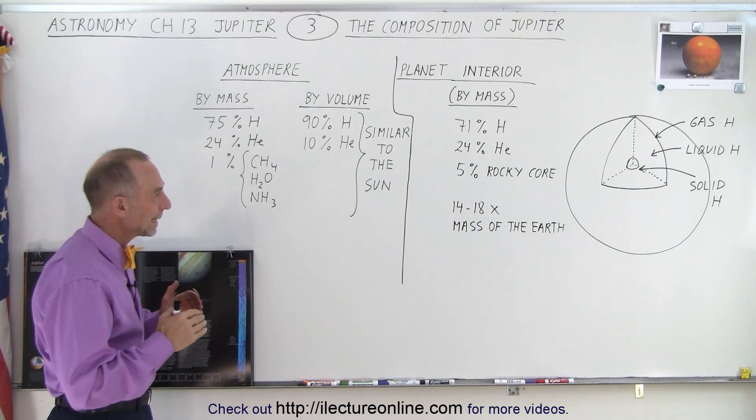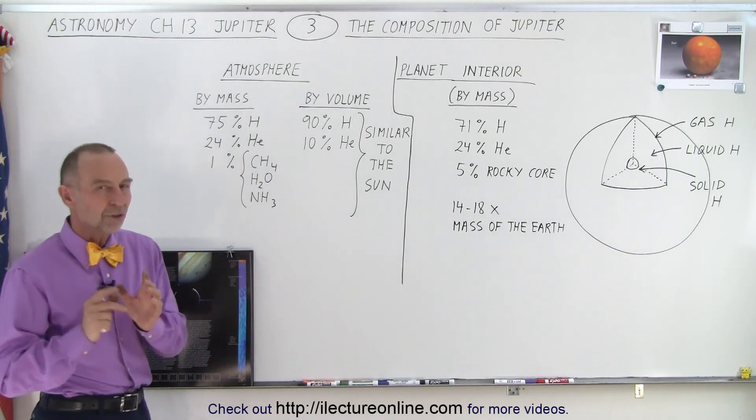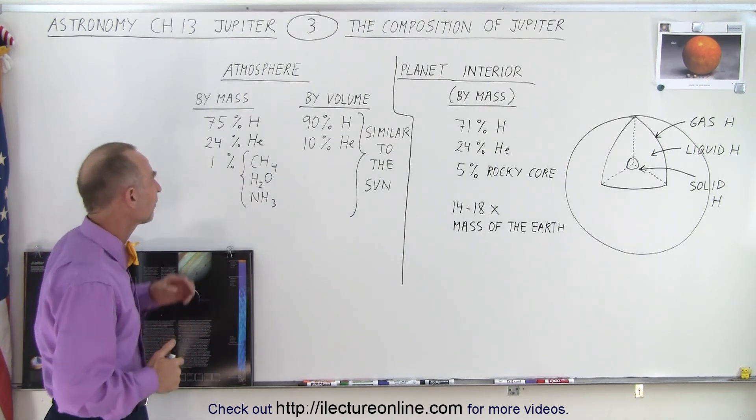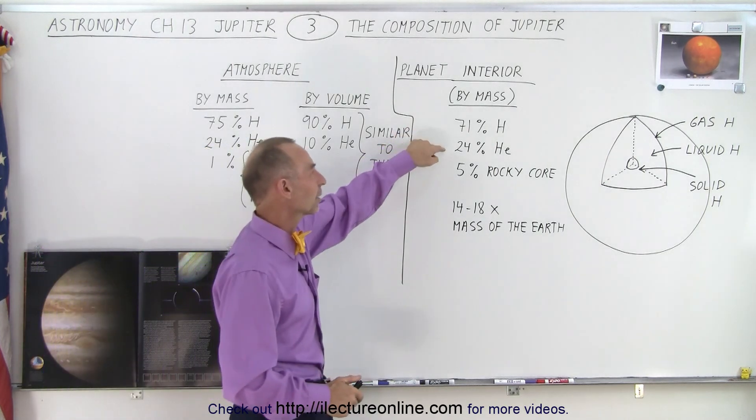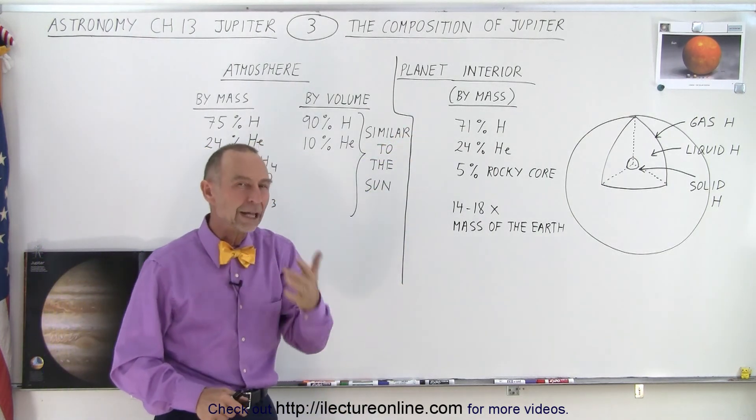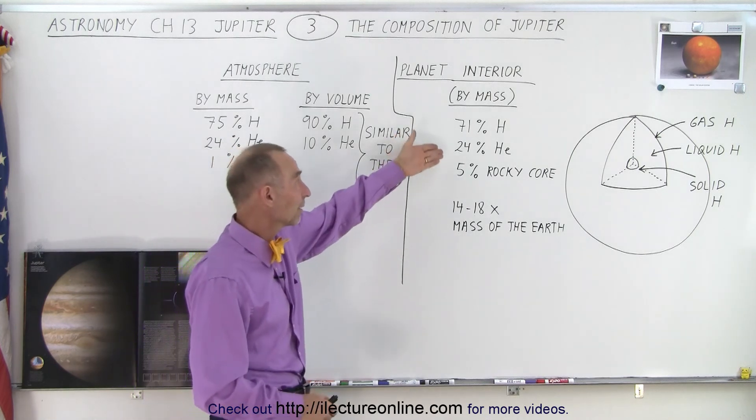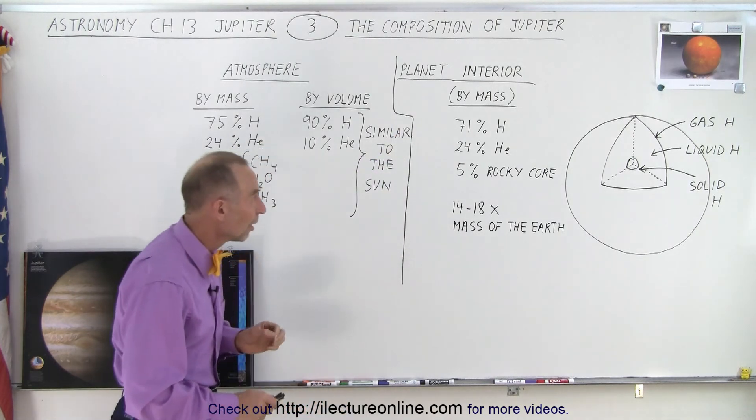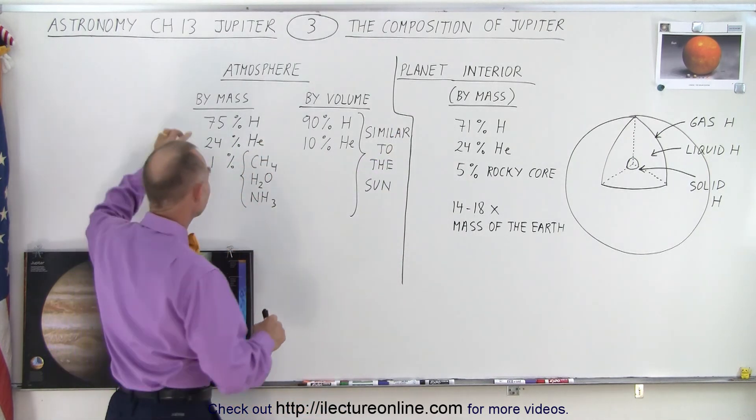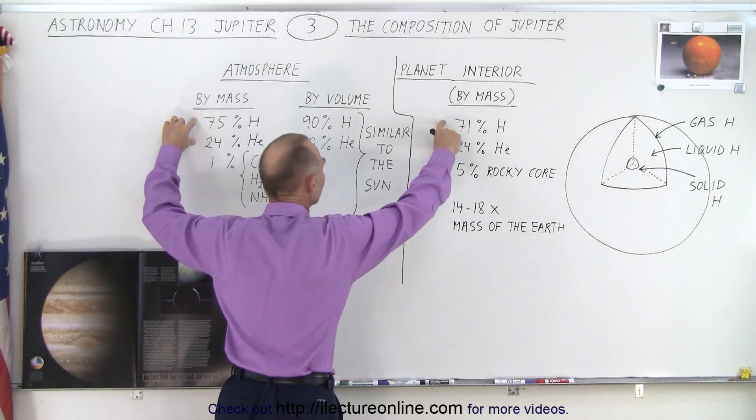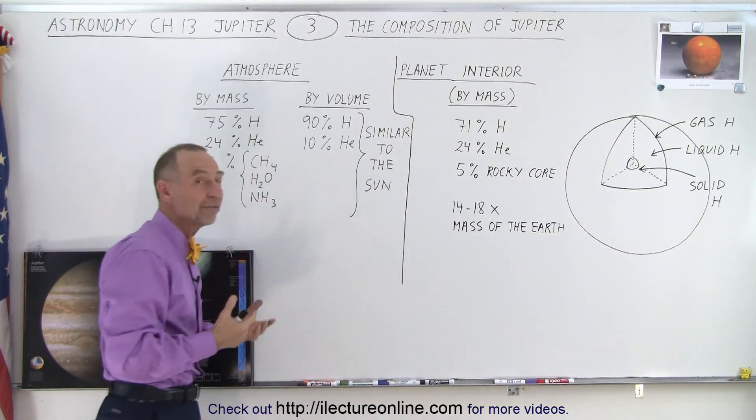When we go into the planet, something changes. The first big difference is that the ratio between hydrogen and helium changes, a little bit more hydrogen relative to helium. But what's really interesting is that either one of these proportions is very similar to the proportion we find on the sun.